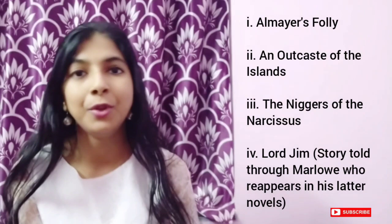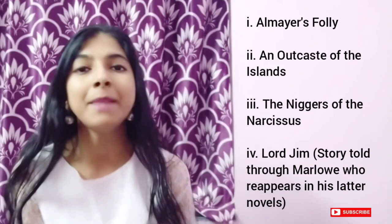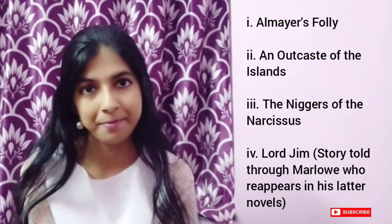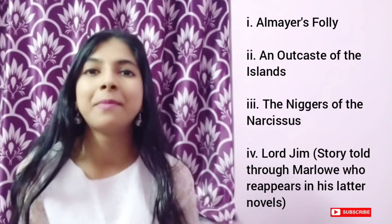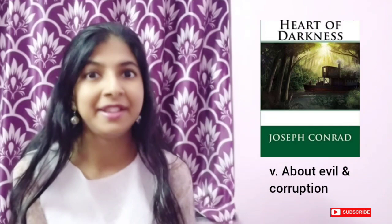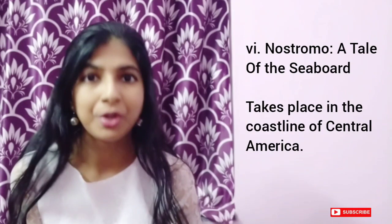Next he wrote a very famous novel known as The Nigger of the Narcissus, which is a very moving story of life on a ship. Then he wrote Lord Jim, which is told through the iconic Marlow, who reappears many times in Joseph Conrad's later novels. Then we have The Heart of Darkness, which is the most popular novel of Joseph Conrad, with an overwhelming sense of evil and corruption. He also wrote Nostromo: A Tale of the Seaboard, based on the coastline of Central America.